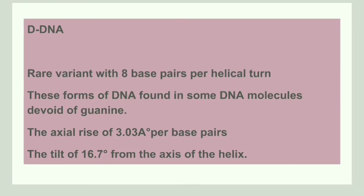D-DNA is another rare form, having 8 base pairs per helical turn. These DNAs are devoid of guanine. The helical rise is 3.03 Å per base pair and the rise per turn is 18.7 Å.